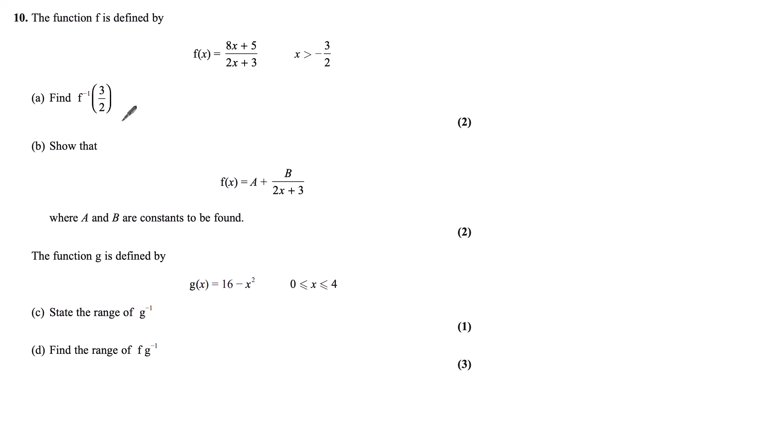So I want to find the inverse function of this f(x) and then substitute in 3/2 to see what the inverse function gives me. Starting with f(x) = (8x + 5)/(2x + 3), I like to think of it as y = (8x + 5)/(2x + 3). This makes it simpler to rearrange because when I inverse a function, I'm essentially wanting to reverse it. So I want to rearrange to make x the subject of this equation.